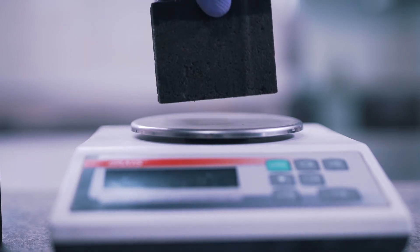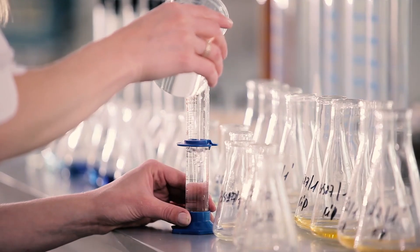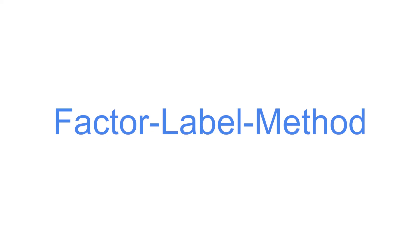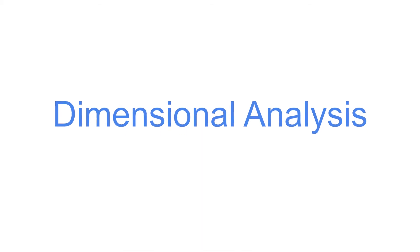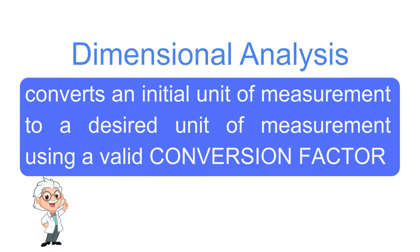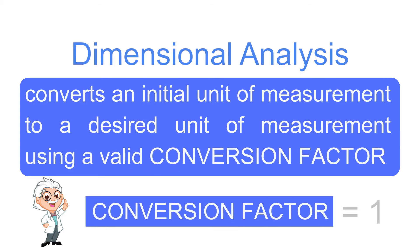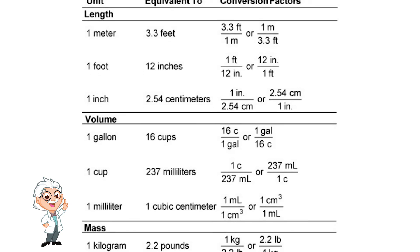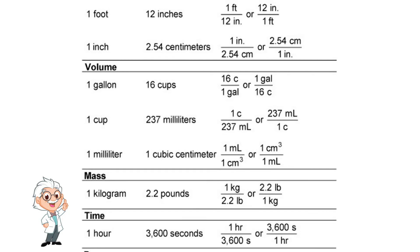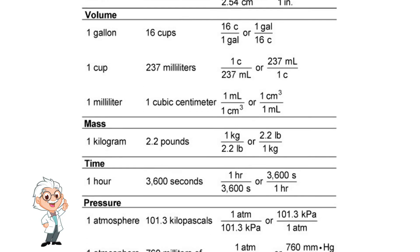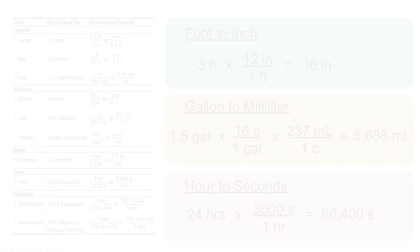In doing measurements in science, we often need to convert one unit of measurement to another unit. We can do this by using a method called the factor label method, commonly known as dimensional analysis. This approach allows us to convert an initial unit of measurement to our desired unit of measurement using a valid conversion factor. A conversion factor is equal to 1. Therefore, multiplying or dividing a given quantity with a conversion factor will simply transform the initial value to a new value expressed in a different unit of measurement. Here is an example.